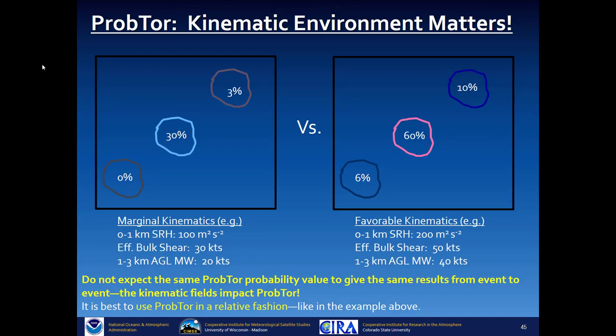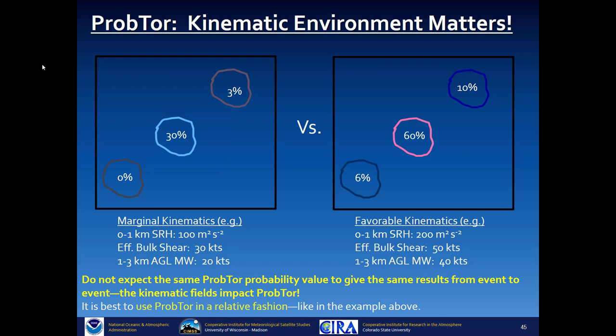This figure tells you that the kinematic environment matters. Do not expect the same PROB TOR probability value to give the same results from event to event, since kinematic fields impact PROB TOR values. For example, you would sample more frequently with your radar the object with a PROB TOR of 30% in a favorable kinematic environment on the left, and similarly the region with PROB TOR of 60% on the right.